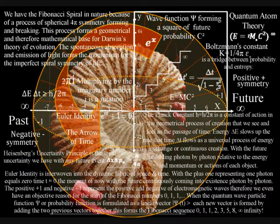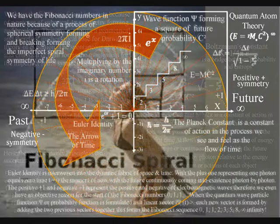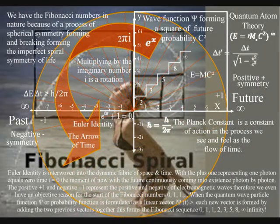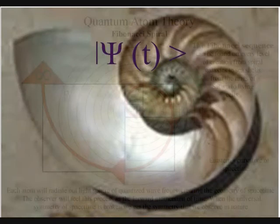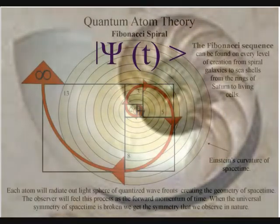It is because these spirals are formed out of broken symmetry that they are never perfect. This is because if the quantum wave particle function or probability function is reformulated as a linear vector, then all the information I can find says that each new vector is formed by adding the two previous vectors together.